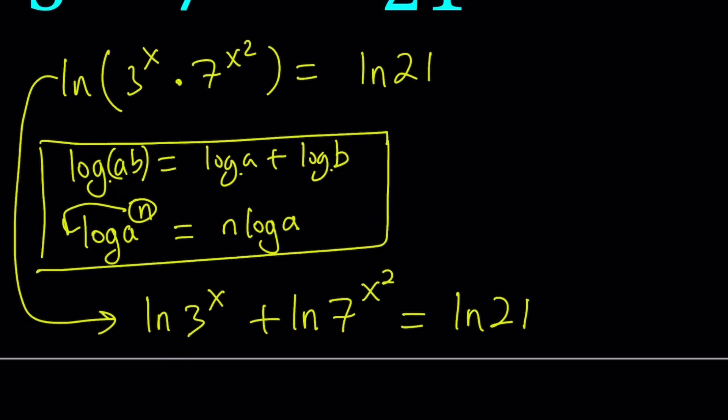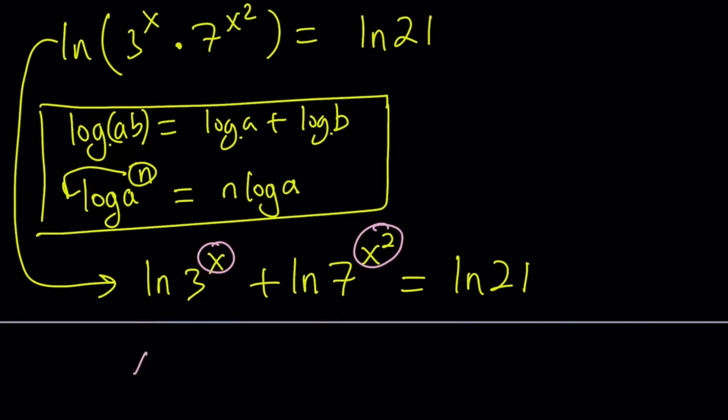All right, so let's go ahead and use the power property next. So we're going to go ahead and move these to the front, the exponents, and write this as X times ln 3 plus X squared times ln 7. I hope you don't mind when I don't write the multiplication symbol. If you want, you can write it. If you put a dot like this and like this, that's going to mean multiplication. Even if you don't write it, it means multiplication because it's understood.